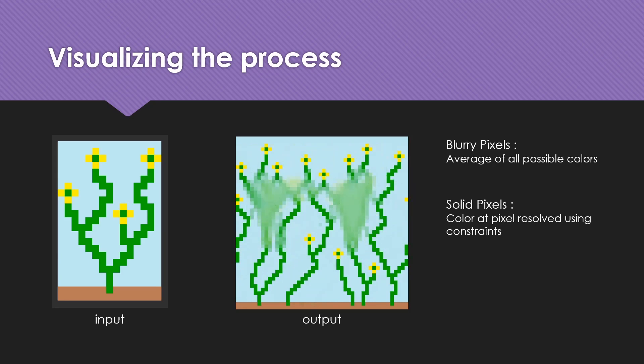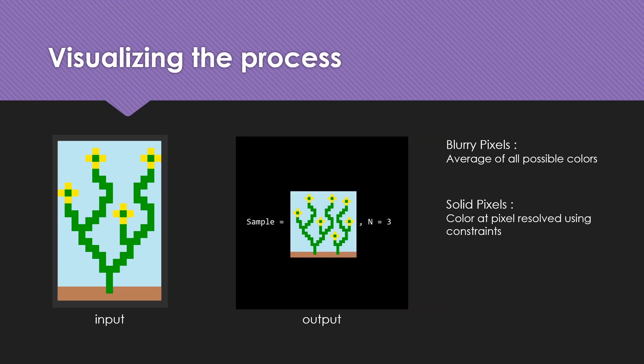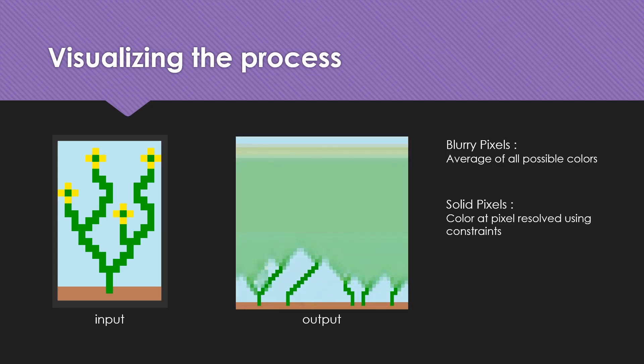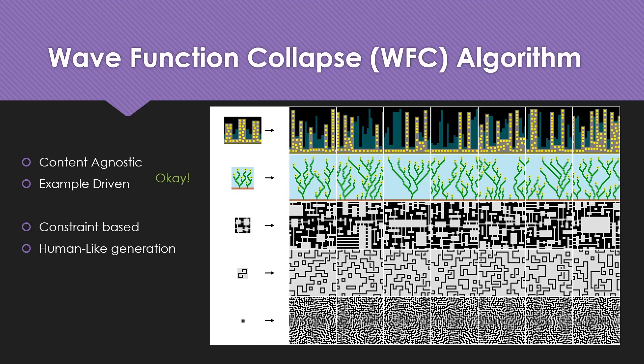This appears almost human-like in generation, where the flower starts from the root and ends at the apex. So we now understand what content-agnostic and example-driven mean, and that constraints come from kernel matching. This human-like generation is achieved because we solve for the lowest entropy, known as the minimum entropy heuristic.